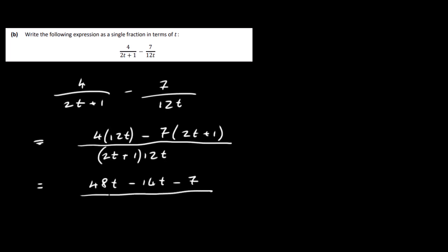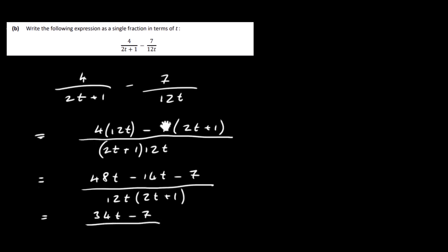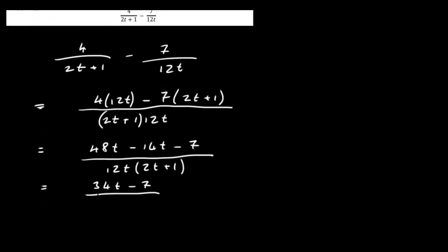We've got on the top 4 times 12t is 48t minus 2 times 7 is 14t minus 7. And then on the bottom we have 12t times 2t plus 1. And finally we have 48t minus 14, that's 34t minus 7. And that's over 12t times 2t plus 1. Now there isn't anything else we can do with that, so that is really it for this part of the question.